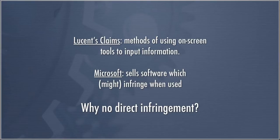Why wouldn't Lucent just sue the end users who are the ones actually directly infringing the method? The easy answer is there are a lot of them, so to effectively stop the infringement they'd have to file enormous numbers of lawsuits. And no individual is going to have significant resources to recover damages from. So it's important for Lucent to be able to sue a company like Microsoft, which is engaging in activities that, although not direct infringement, are indirectly causing the infringement of the patent.